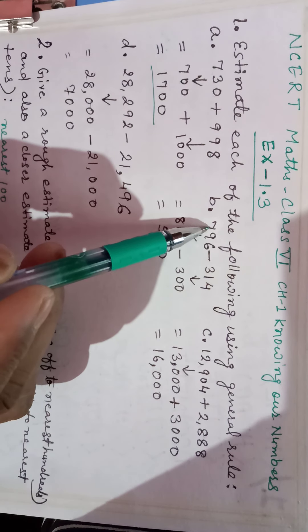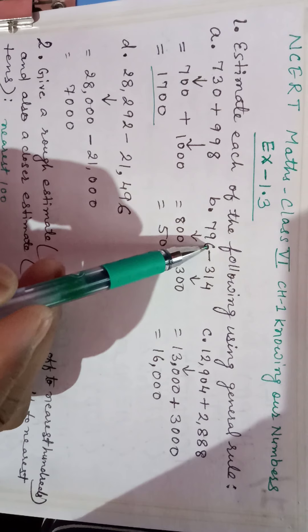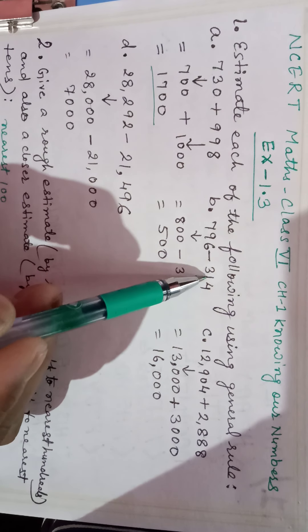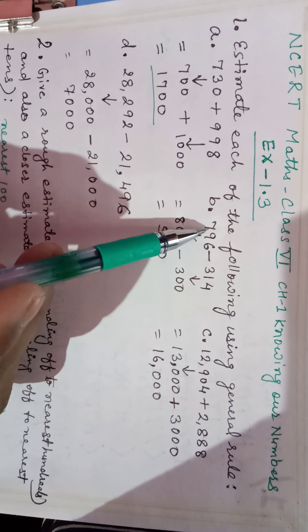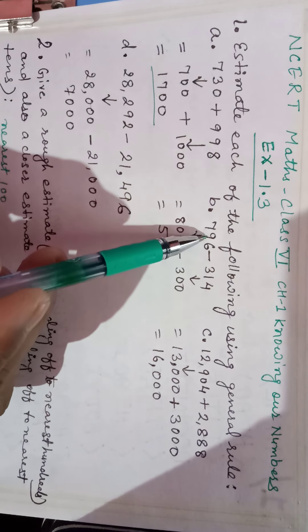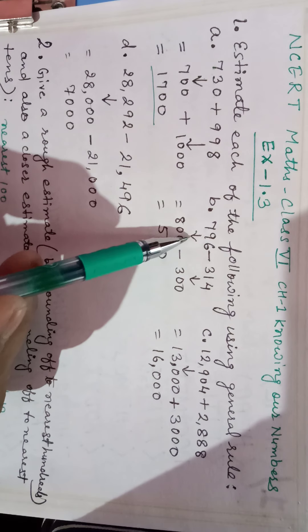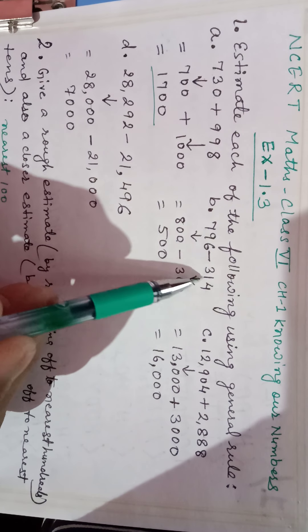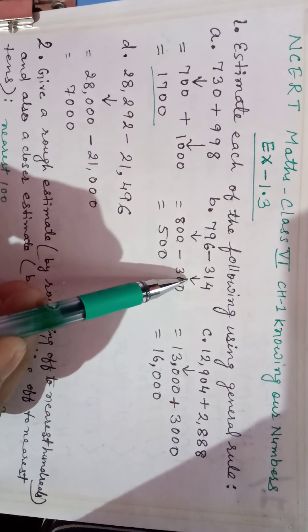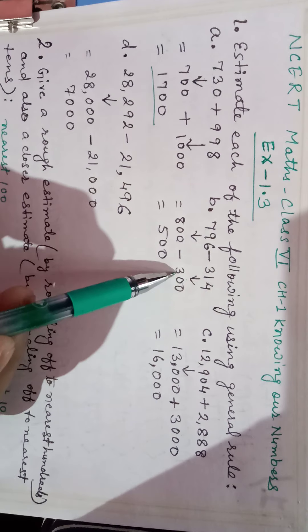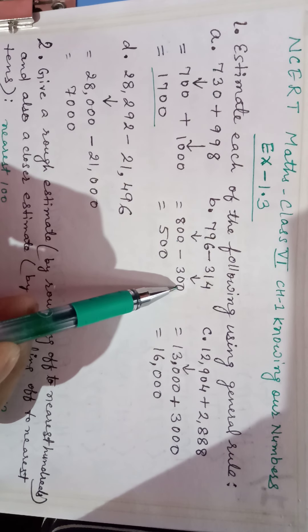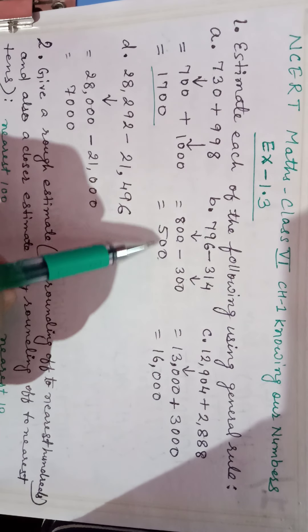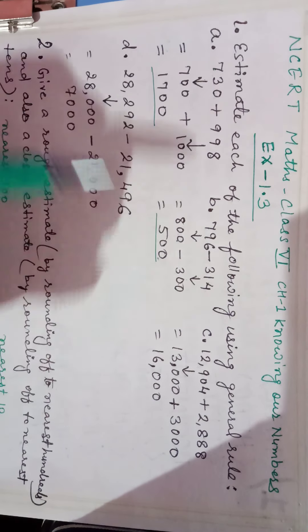Now 796 minus 314. Obviously 796 will be rounded as 800 and 314 will be rounded as 300. So 800 minus 300 equals 500. This is the answer.